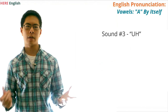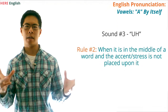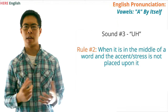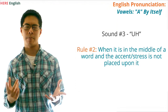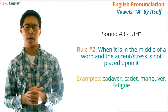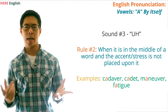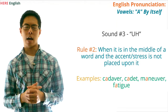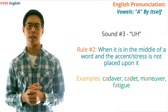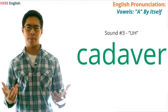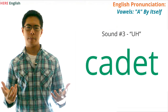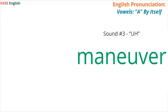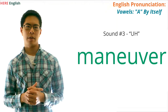Here's the second rule for when the letter A will sound like a schwa: the vowel A will sound like a schwa when it is in the middle of a word and the accent or stress is not placed upon it. Examples of words with this rule are cadaver, cadet, maneuver, and fatigue. Practice saying these words: cadaver, cadet, maneuver, fatigue.